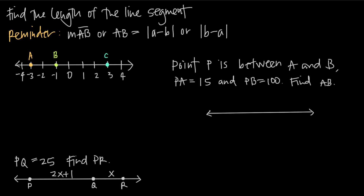Now, remember to indicate a line segment, we always write the two endpoints. So for example, if the endpoints are A and B, we write a line over it to indicate line segment. So when we're talking about the length of a line segment, we don't just say AB with the line over it, because the length of the line segment and the line segment itself are not the same thing.